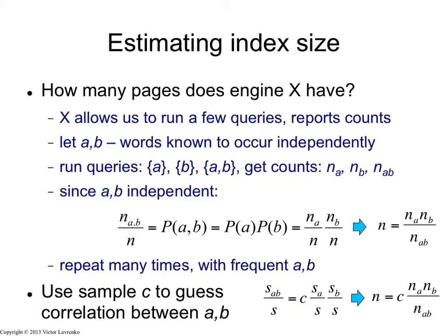So I'm going to play the following game. I'm going to take two words, a and b, and I'm going to assume that these words are known to occur independently. So what this means is that they're not correlated. If they occur together, they occur together by pure chance, not because one word is correlated with the other.